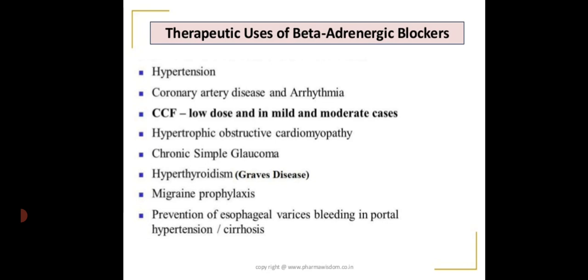Other uses include chronic simple glaucoma, hyperthyroidism or Graves' disease — in which the thyroid over-produces hormones — migraine prophylaxis, and prevention of esophageal varices. Esophageal varices occur when swollen veins in the lower esophagus rupture and bleed, specifically in cases of portal hypertension and cirrhosis. Portal hypertension involves high blood pressure in the portal veins, which carry blood from the GI tract, gallbladder, pancreas, and spleen to the liver.